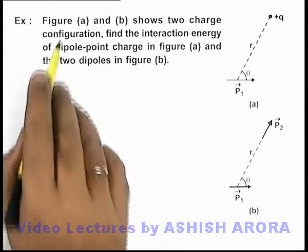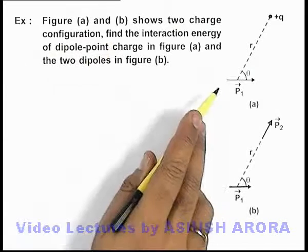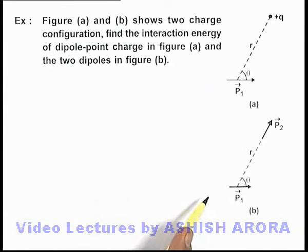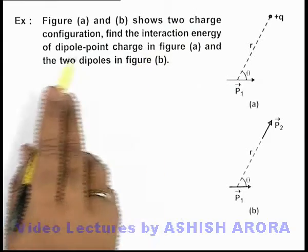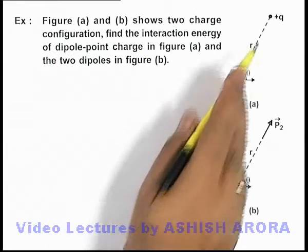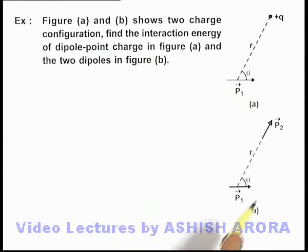In this example, figures (a) and (b) show two charge configurations. We are required to find the interaction energy of a dipole and point charge in figure (a), and two dipoles in figure (b).